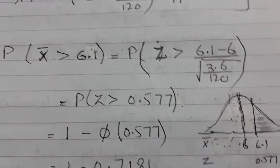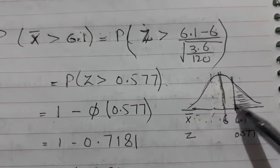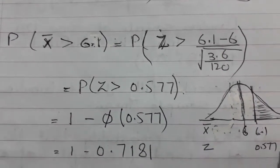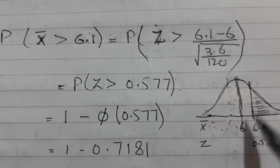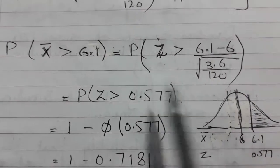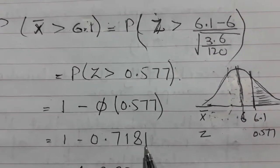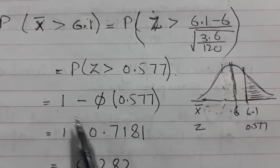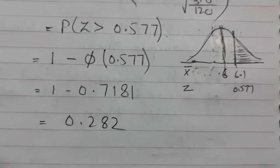The probability P(Z > 0.577) corresponds to the right-hand tail. Reading from the standard normal table, Φ(0.577) = 0.7181, which gives the left-hand probability. Subtracting from 1: 1 − 0.7181 = 0.282 to 3 significant figures. This is the probability that the sample mean is greater than 6.1.